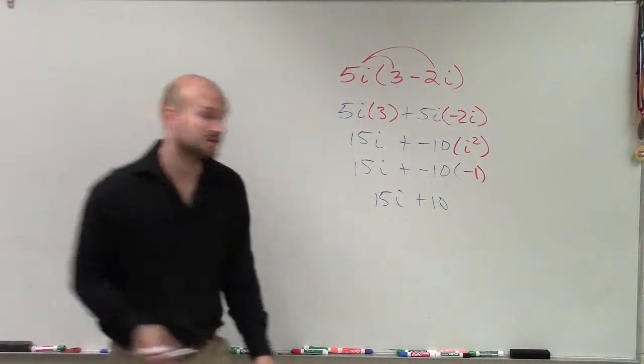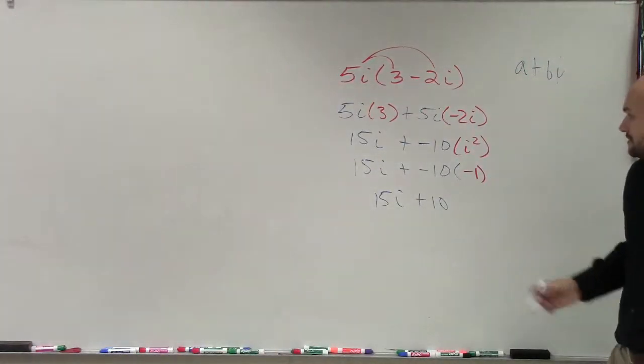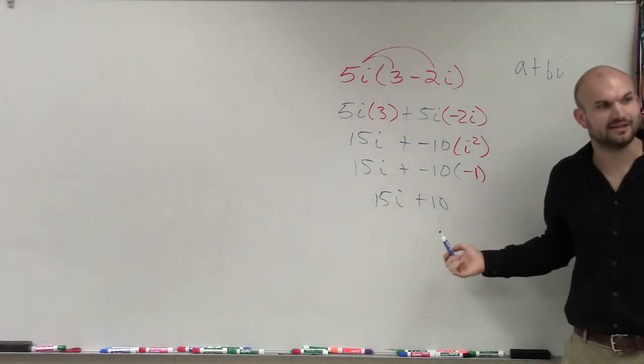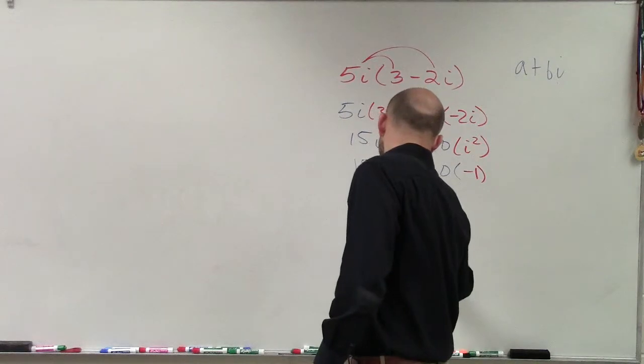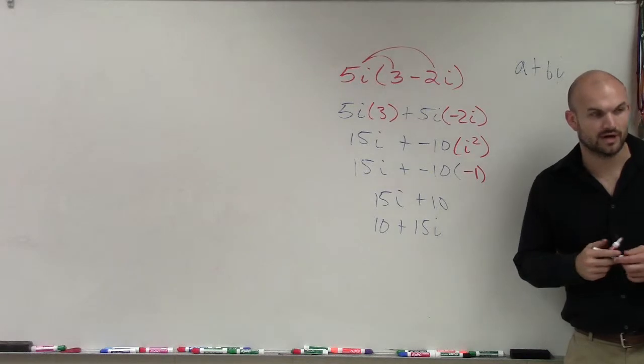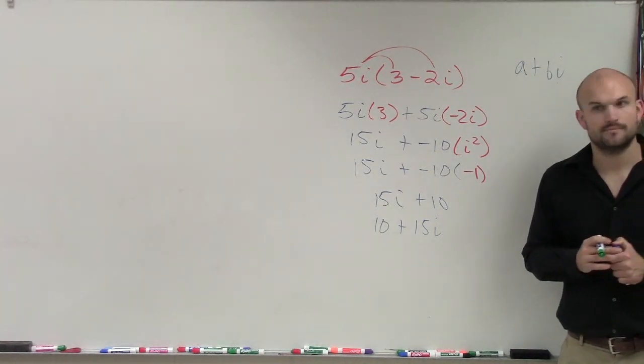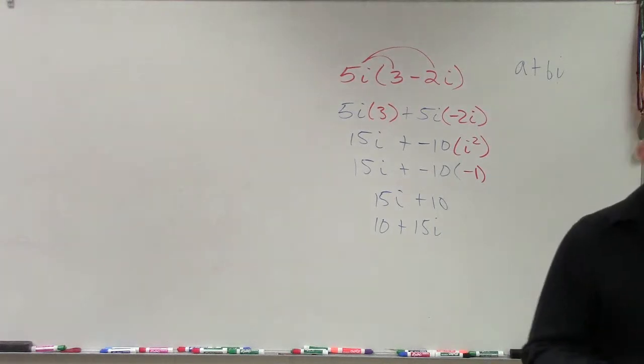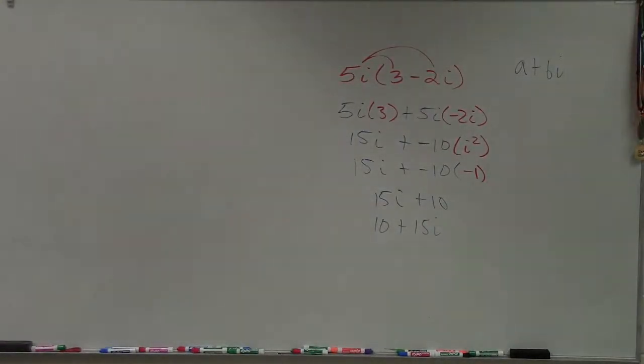But, if you guys remember in your notes I said a complex number is written in the form of a plus bi, right? So, we want to write this in the form of a plus bi. So, I write it as 10 plus 15i. Where 10 is my real part and 15i is my imaginary part. Okay? So, that was example number one. Yeah, it wasn't bad, was it?